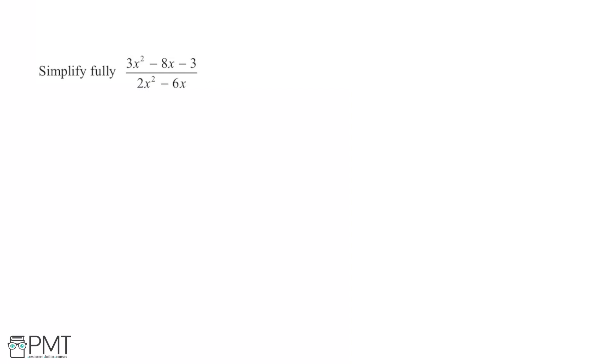Looking here at the denominator, we've got a common factor here. We've got x in both the 2x squared and the minus 6x, and also both will divide by 2.